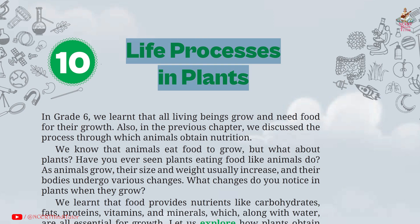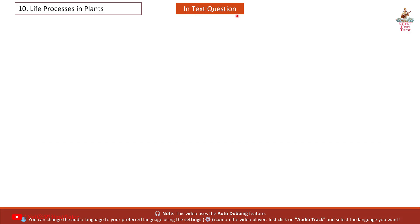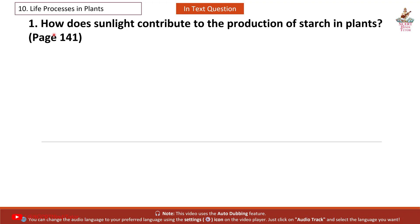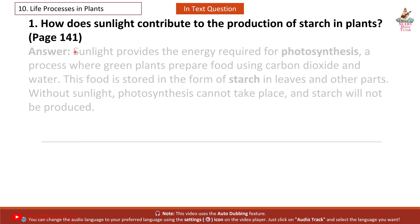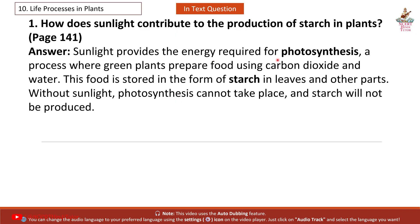Chapter 10: Life Processes in Plants — Question Answers from Grade 7 Subject Science Book Curiosity. In-text Question 1: How does sunlight contribute to the production of starch in plants? Answer (Page 141): Sunlight provides the energy required for photosynthesis, a process where green plants prepare food using carbon dioxide and water. This food is stored in the form of starch in leaves and other parts. Without sunlight, photosynthesis cannot take place and starch will not be produced.